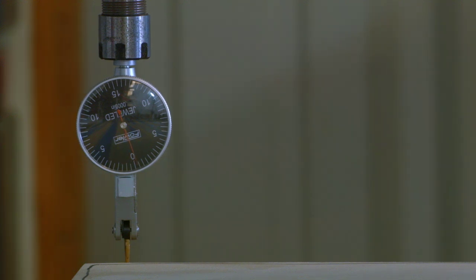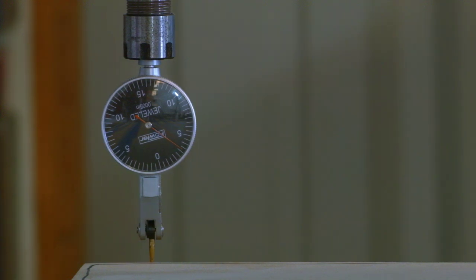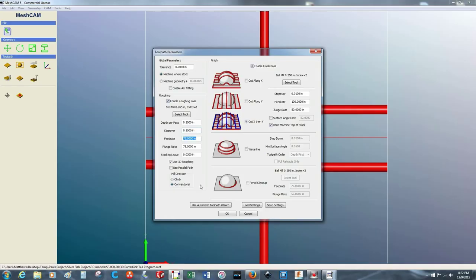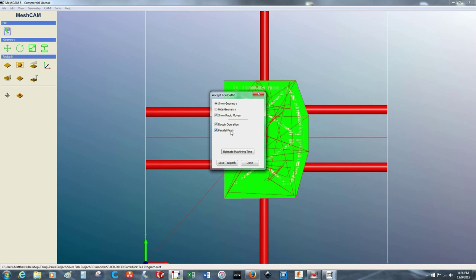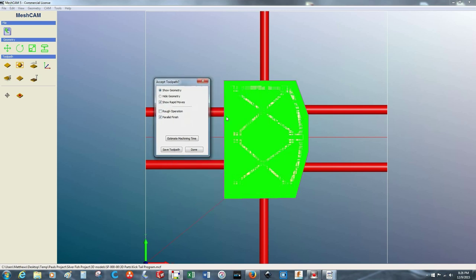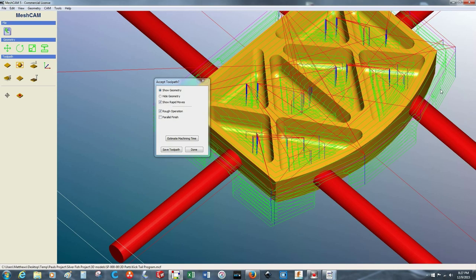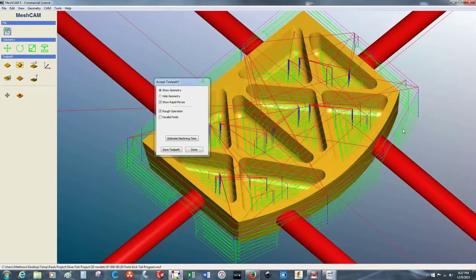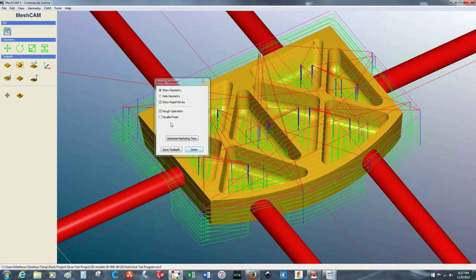Here I'm setting up the first part on the table and squaring it up. I set the programming of the part and take some time to double check the tool path. It looks good so let's run it.